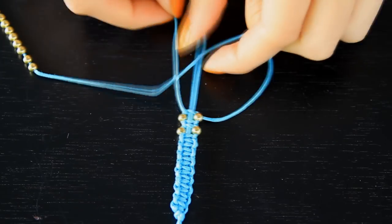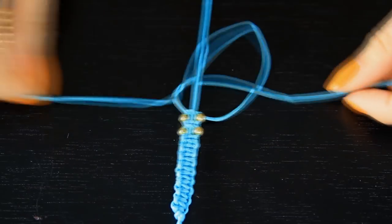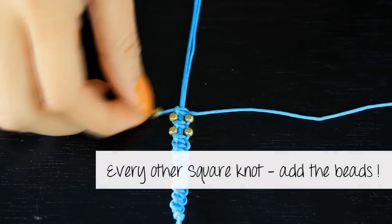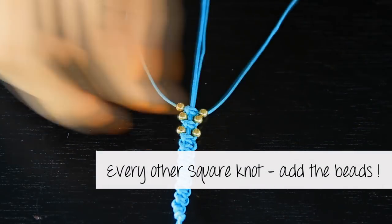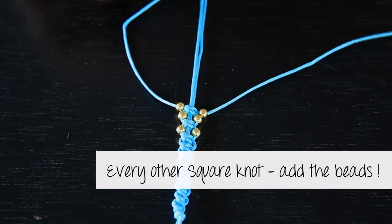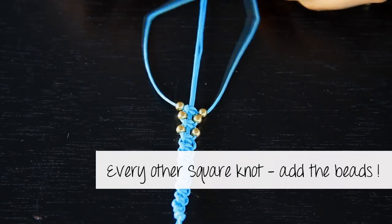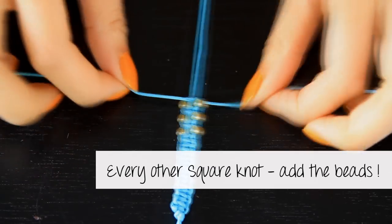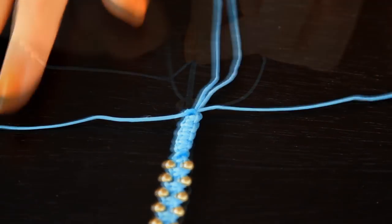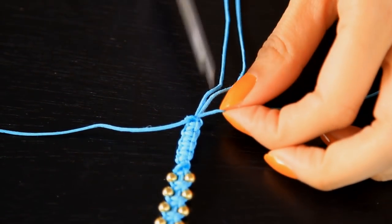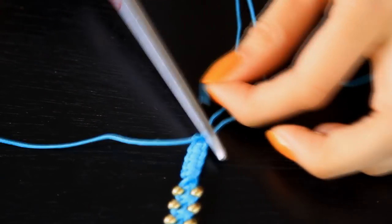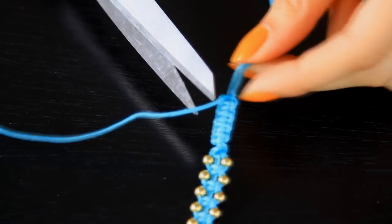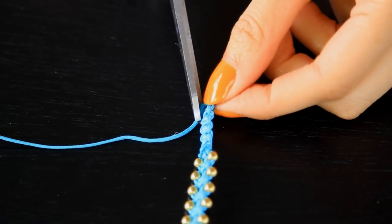Once you run out of the beads, make about 15 more square knots. And once you're at the end, just tie it in as a regular knot. And then add a little dab of glue just to secure it in the knot.